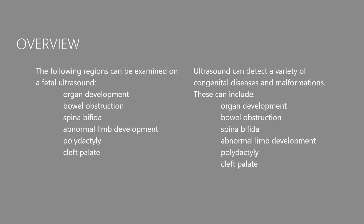As a brief overview, ultrasound can be used to detect a range of fetal abnormalities including organ defects, obstructions, spina bifida, abnormal limb development, polydactyly, and cleft palate — essentially any region that can be ultrasounded in a normal human can also be assessed in a fetus. One issue is that the orientation of the fetus in the womb can obstruct certain views.